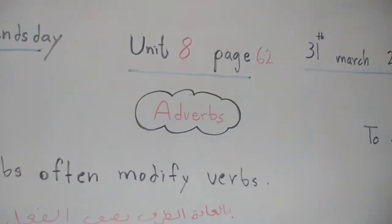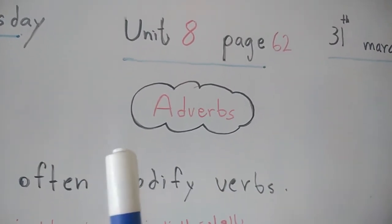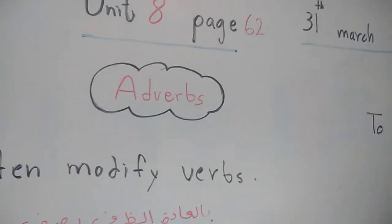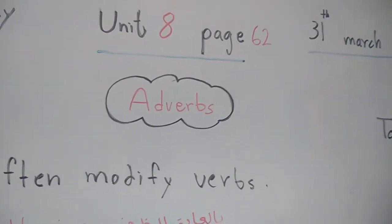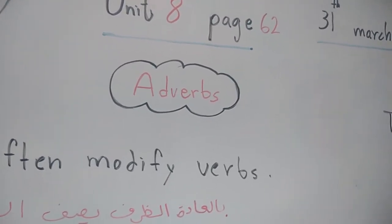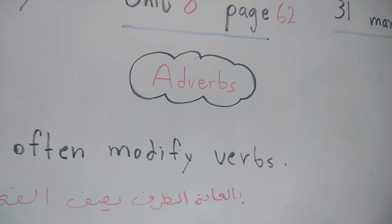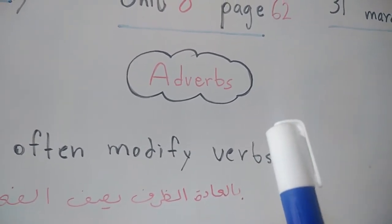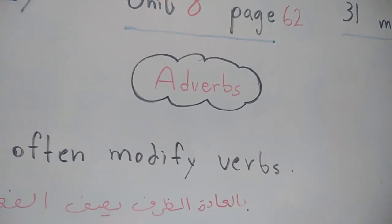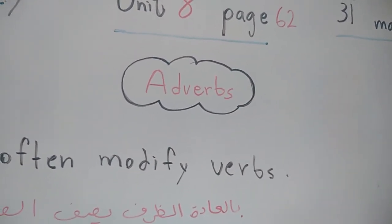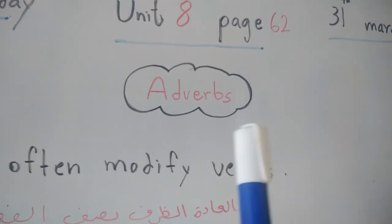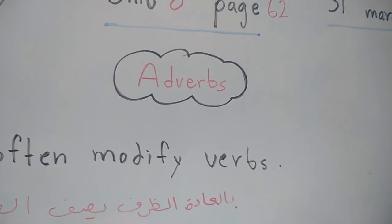The title of our lesson is: adverbs. شو هي الـ adverbs? الـ adverbs اللي هي بالعربي بنسميها الظرف. أكيد أخذتوه بالعربي — اسم، صفة، فعل، ظرف. شرحت عنها قبل لما عملنا مراجعة أول الفصل، وقلت إن الـ adverb هو الظرف. هلأ بدنا نحكي عنها بشكل تفصيلي أكتر.